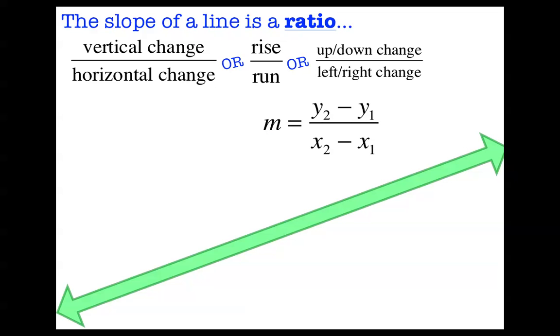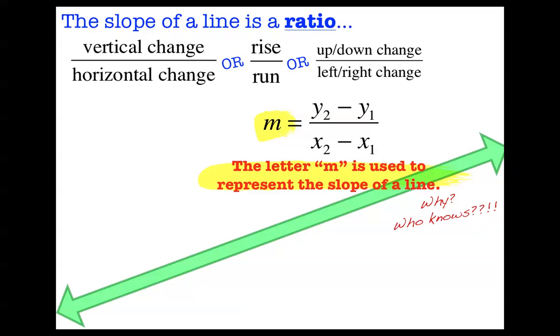Except, wait a second, we saw that formula before, but we never really talked about what that m is there for. Well, that letter m is used to represent the slope of a line. Why? Who knows? Why would you pick the letter m to represent slope? I haven't the slightest idea. Maybe whoever invented the letter m for slope just didn't speak English or something. But whatever the reason is, the letter m is used to represent the slope of a line, and so you might as well just memorize it.